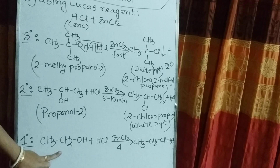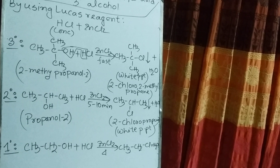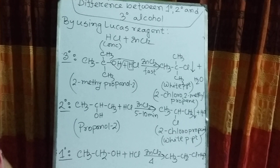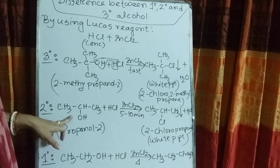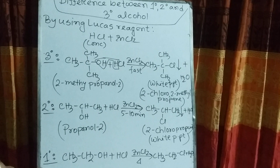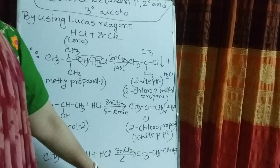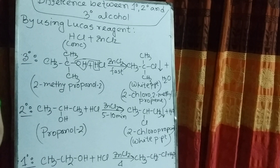Tertiary carbocation is more stable than secondary and primary. This reaction is a nucleophilic substitution reaction. Because the stability of the tertiary carbocation is greatest, it instantly forms with the chloride ion and gives a white precipitate. Secondary carbocation is less stable, so it takes 5 to 10 minutes. Primary carbocation is least stable, so it does not form easily, but when heat is applied, it may form, and the chloride ion joins to give a turbid solution.